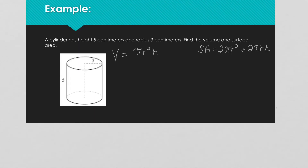For this problem we have a cylinder with a height of 5 centimeters and a radius of 3 centimeters. Find the volume and the surface area. The volume formula is π × r² × h. We're going to approximate 3.14 for pi.